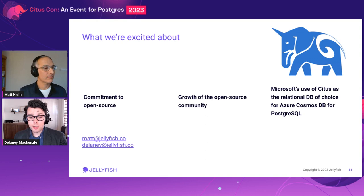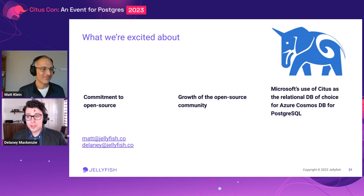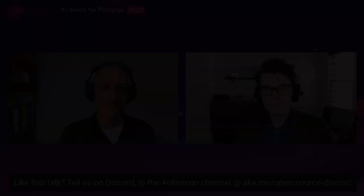A few things we're excited about going forward: Citus's commitment to open source — in 2022, making all features available in the open-source code base really helped us. Growing the open-source community was actually our primary motivation for doing this talk, because we ran into so many weird cases and spent many hours debugging, and we're hoping other people don't have to do the same bushwhacking we did. And finally, Microsoft's investment in Citus as the relational database of choice for Azure Cosmos — we hope that means even more investment going forward. If this talk is helpful, or you've run into the same problems, our emails are on the page — please shoot us a note, we'd love to chat.